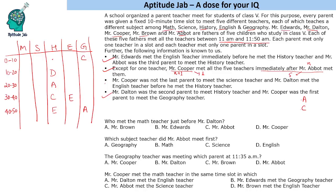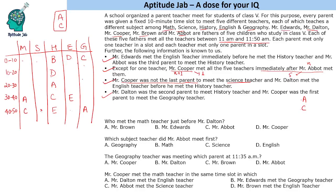Using the condition that Mr. Cooper was not the last to meet the Science teacher, and that he must be last for exactly one teacher, we place the Abbott–Cooper pair accordingly. Cooper cannot be last for Science, so the Abbott–Cooper (AC) pair must fall in the appropriate position. We also fill in Dalton where required for English and History, and apply the Sudoku rule that all rows and columns must be distinct.